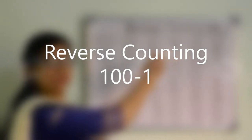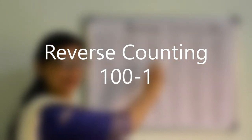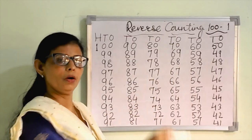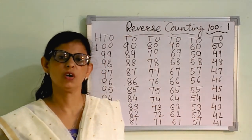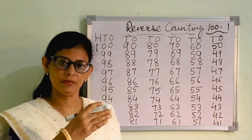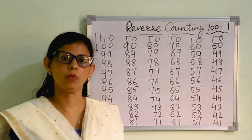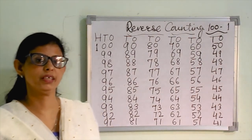Hello children, in my maths class today's topic is reverse counting. Reverse counting means backward counting. Already we have learned forward counting. Forward counting means from smallest to biggest, and reverse counting means from biggest to smallest.